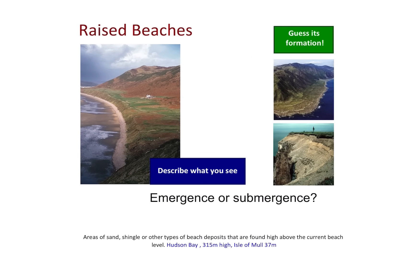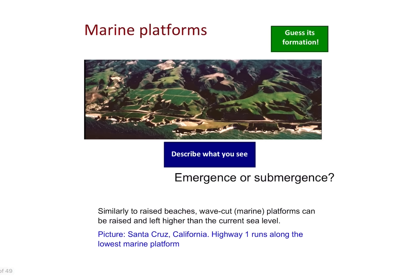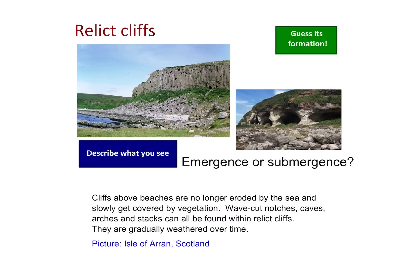Raised beaches are areas of sand, shingle, and deposits found high above the tide — think Hudson Bay as your best example. Marine platforms are wave-cut platforms that have been raised and left higher than the current sea level; Santa Cruz, California is a great example. Relict cliffs are cliffs above beaches no longer eroded by the sea and slowly covered by vegetation — the Isle of Arran in Scotland is a great example.